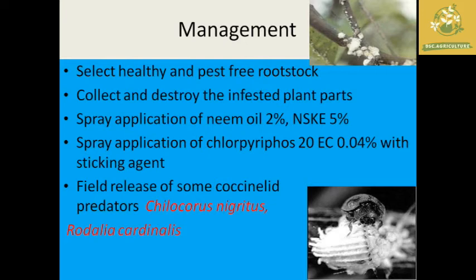Management practices for cottony cushion scale include selecting healthy and pest-free rootstock, collecting and destroying infected plant parts when observed in the field, and spraying neem oil at 2% or neem seed kernel extract at 5%. These neem-based sprays must be applied before rain during non-rainy seasons, as rain reduces their effectiveness. Spraying chlorpyrifos 20 EC at 0.04% can also be used but chemical use is not mainly recommended as it can cause resistance. Releasing ladybird beetles as predators is preferred.